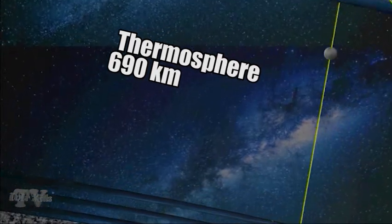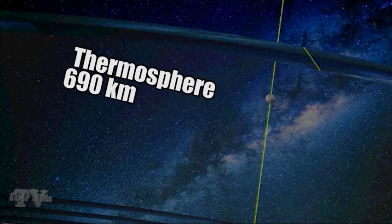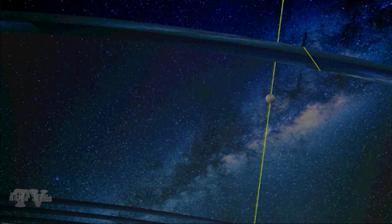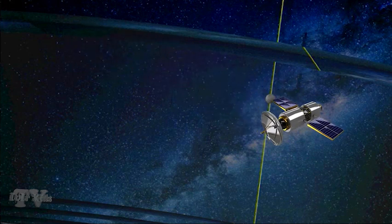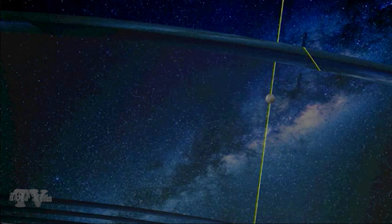The thermosphere, thickness of 600 km, ends at an altitude of 690 km. The density of the atmosphere is close to vacuum. It is in this layer that almost all our spacecraft fly. We call it space.